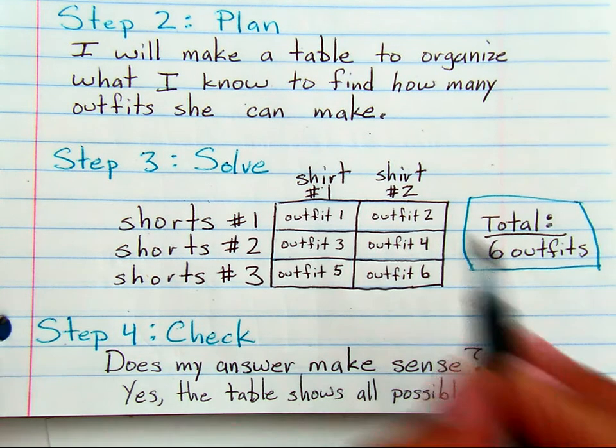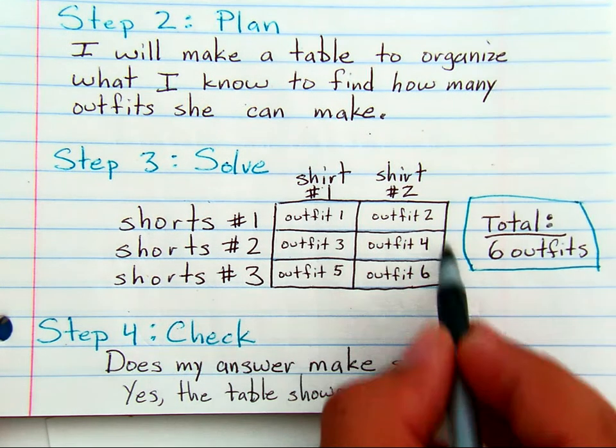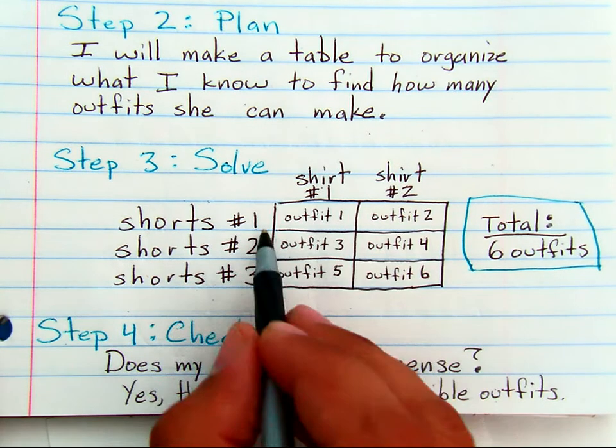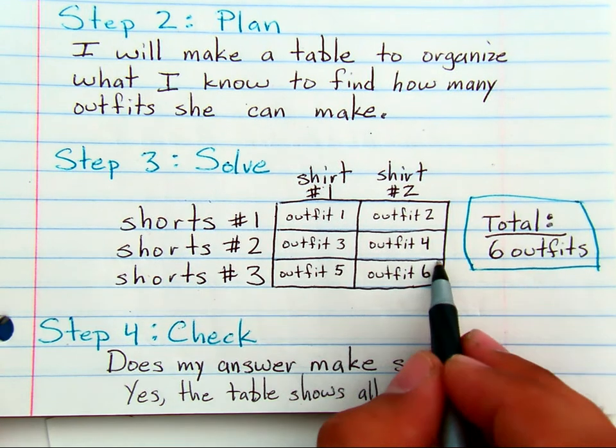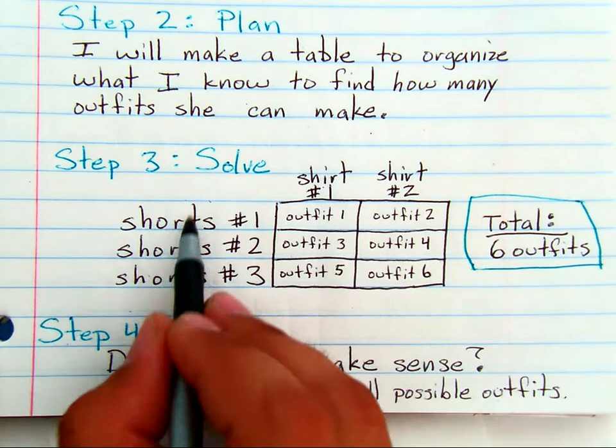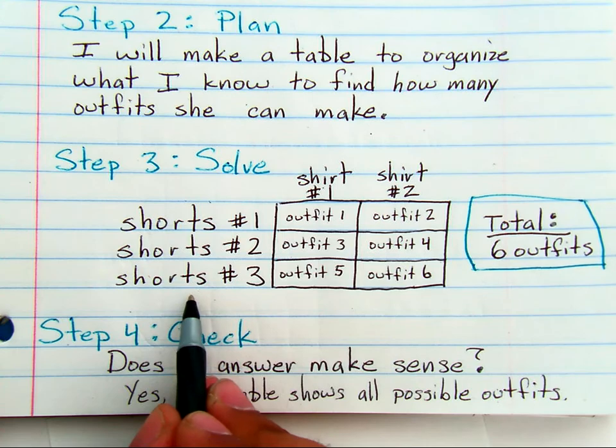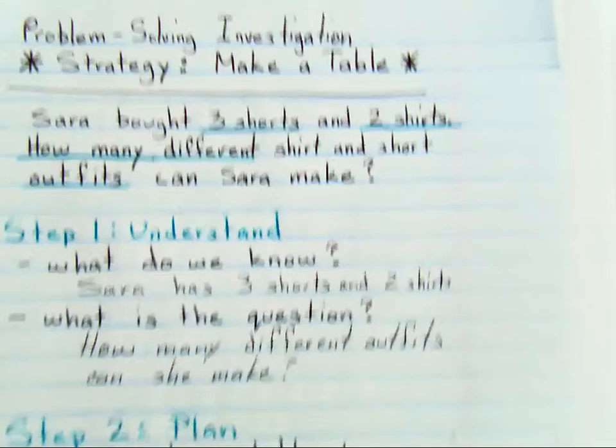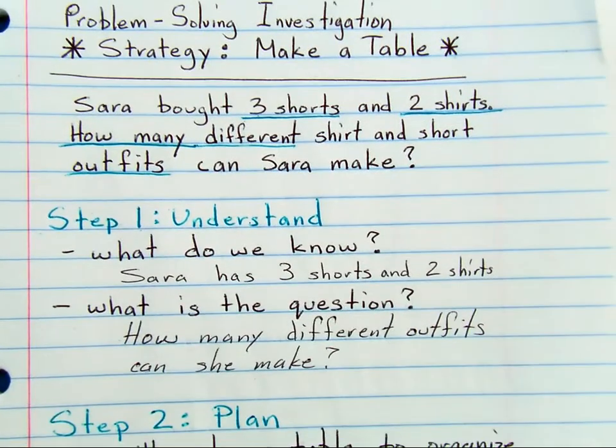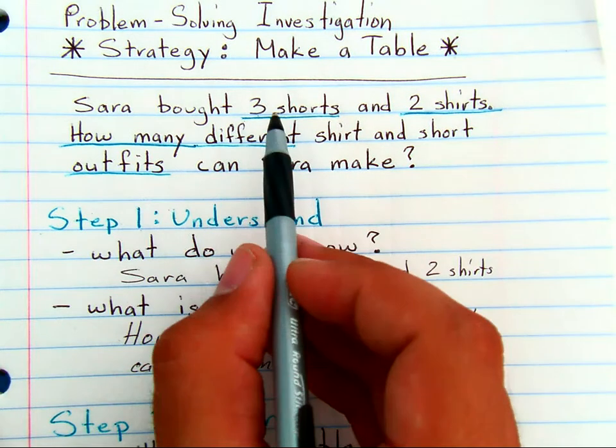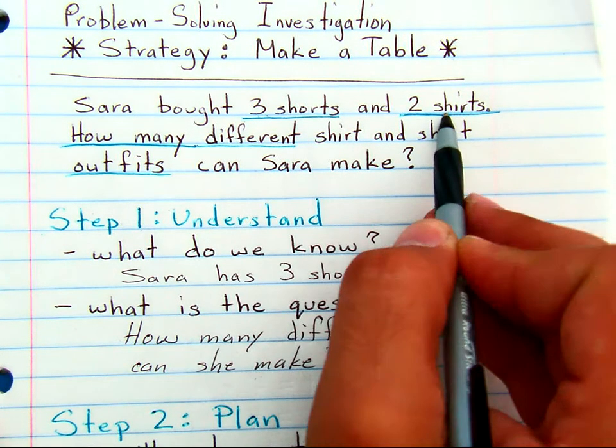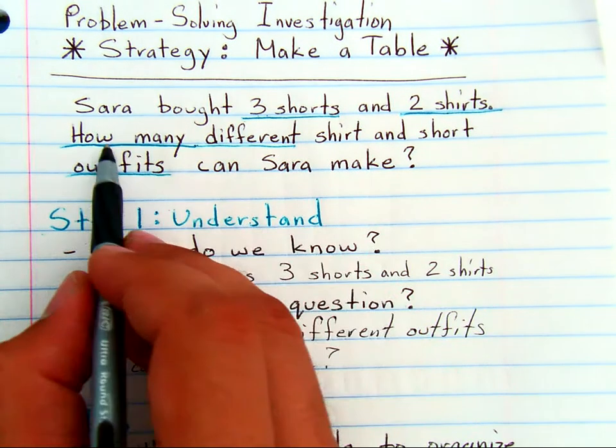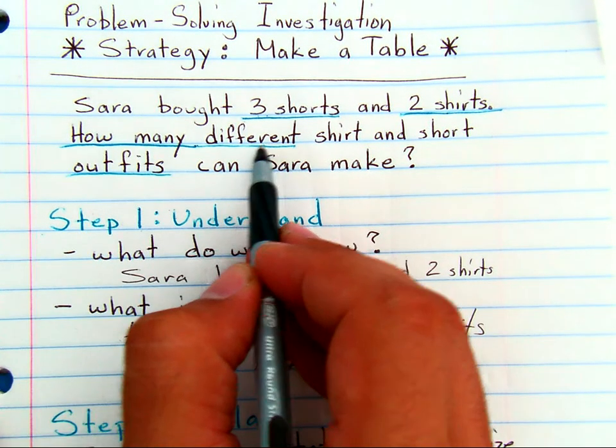If you make a table like this, you are able to see and prove exactly how many outfits you can make with that many shirts and that many shorts. So making a table is a very helpful strategy for solving problems that involve combining numbers of things to find out how many different ways they can be combined.